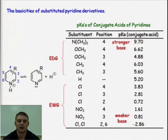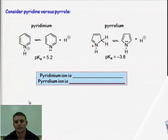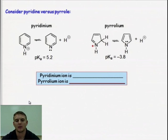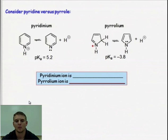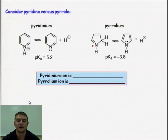We can just think of it pulling electron density all the way through the ring and having less electron density at that nitrogen lone pair. Now if we consider this case, where we have the conjugate acids of pyridine and pyrrole shown on the left and right, we see a very large difference in acidity between the two conjugate acids. We should also note that the conjugate acid of pyrrole is very acidic, with a pKa of negative 3.8.